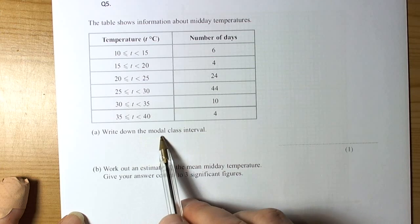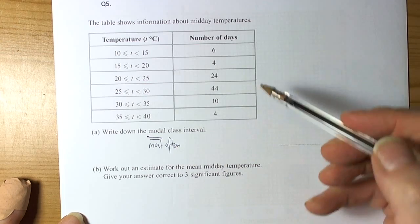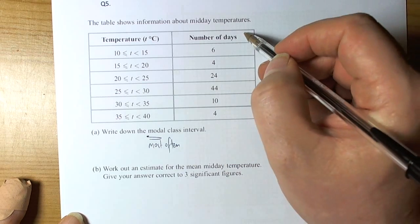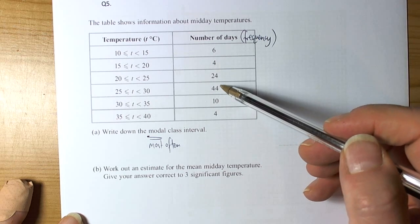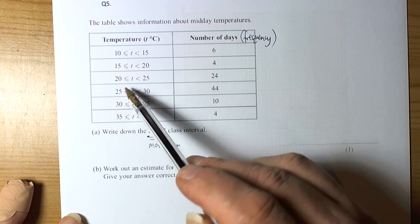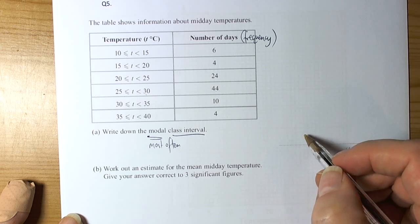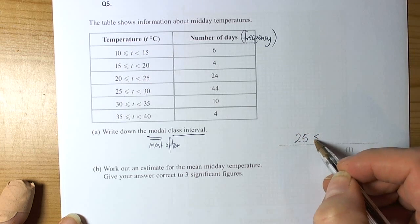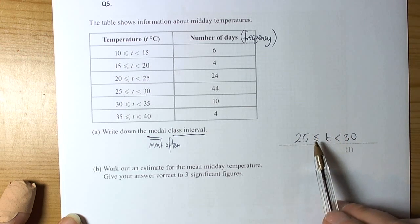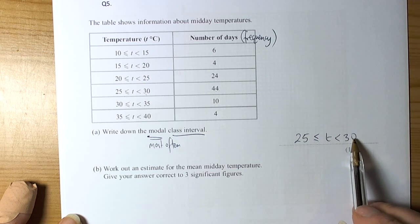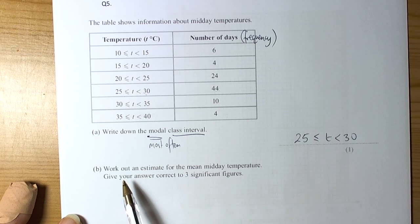The first thing says here, write down the modal class. Well, modal is just about most, so the most often, the highest frequency. When we look down the frequency column here, the number of days is telling us how many days, so we'd have to consider that as the frequency. And we can see that the most days, 44, the temperature was between 25 and 30.